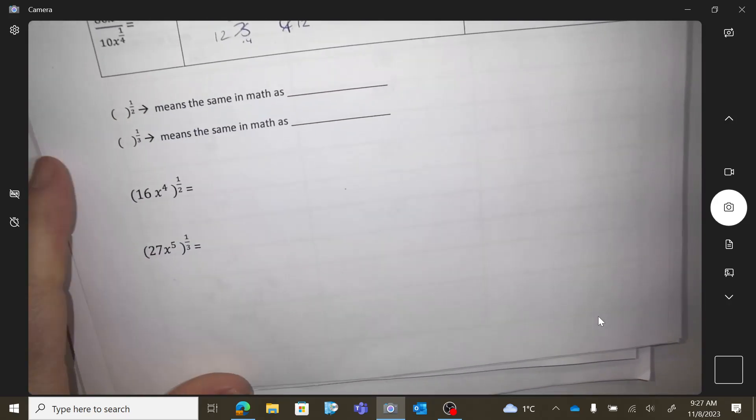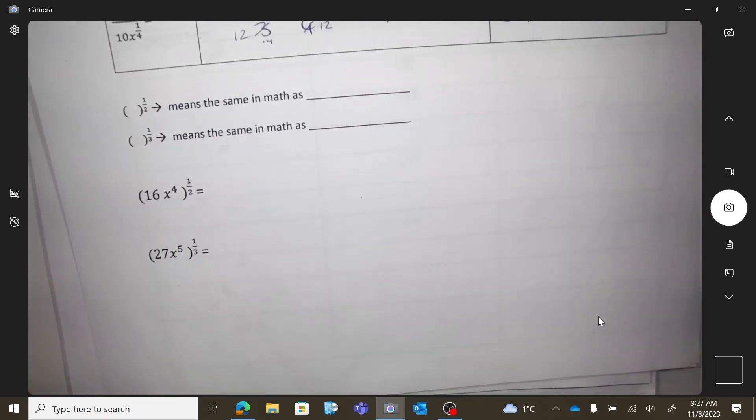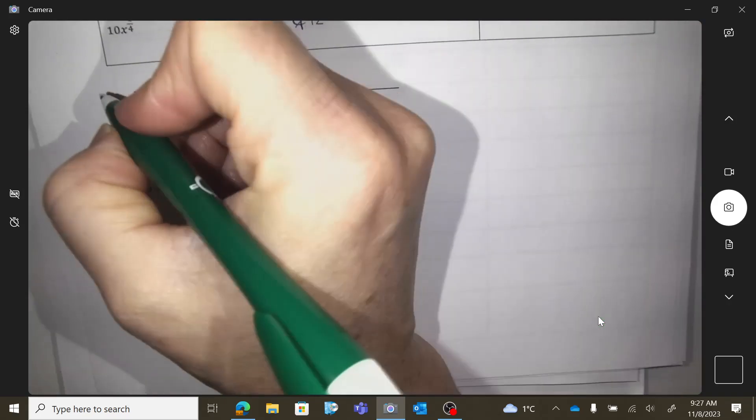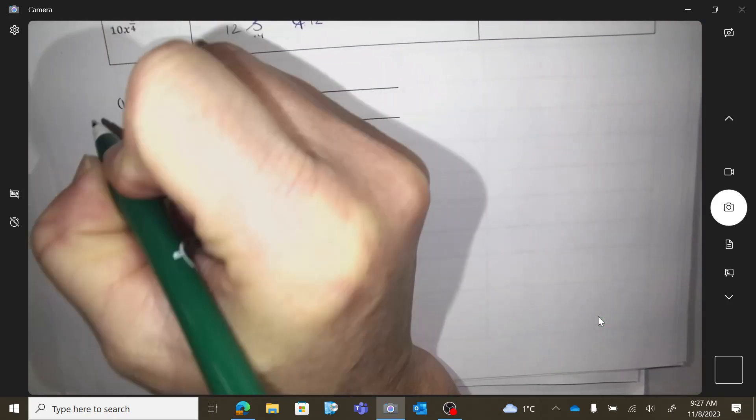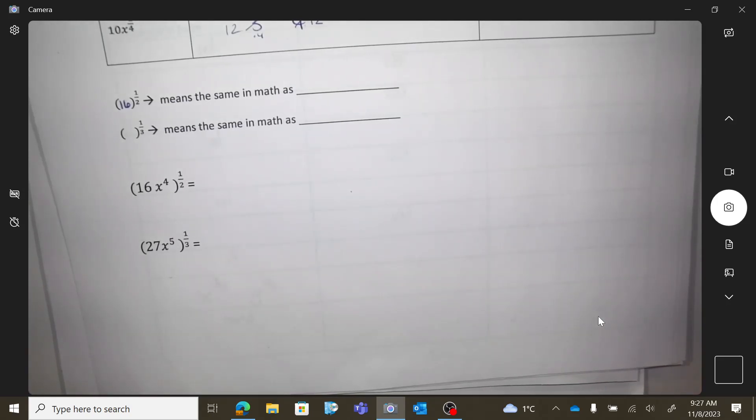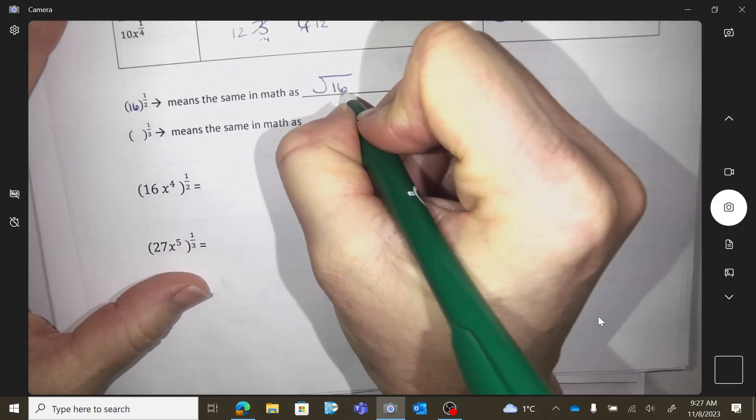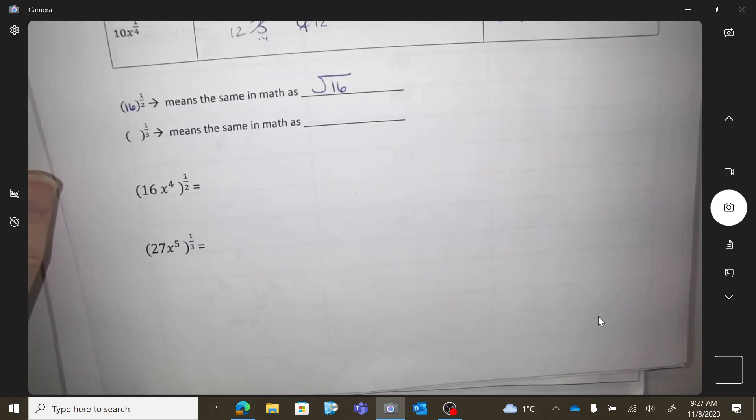Okay. Just a couple of notes here. If you have an exponent that is a fraction, so I'm going to go like this. 16 to the 1 half. So 1 half is the same math as doing a square root of 16.